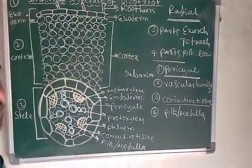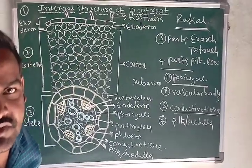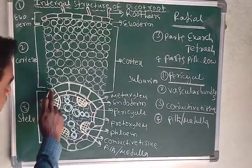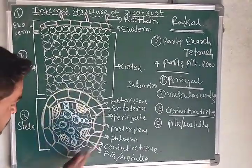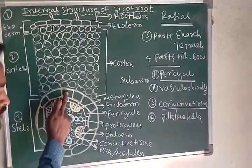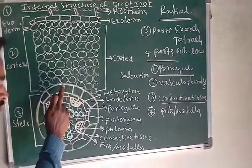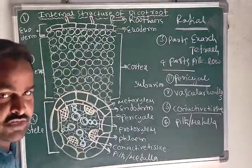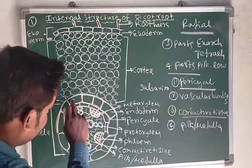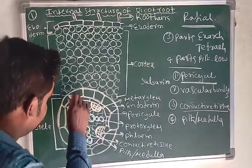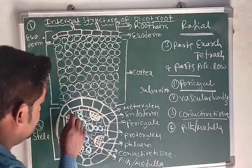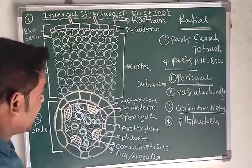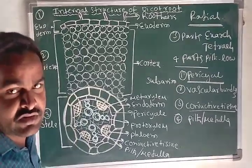The innermost layer of the cortex is called the endoderm, and it belongs to the cortex, not the stele. The cells of the endoderm are barrel-shaped cells.